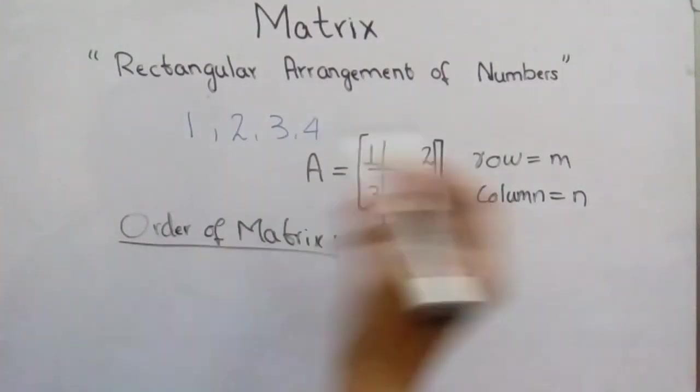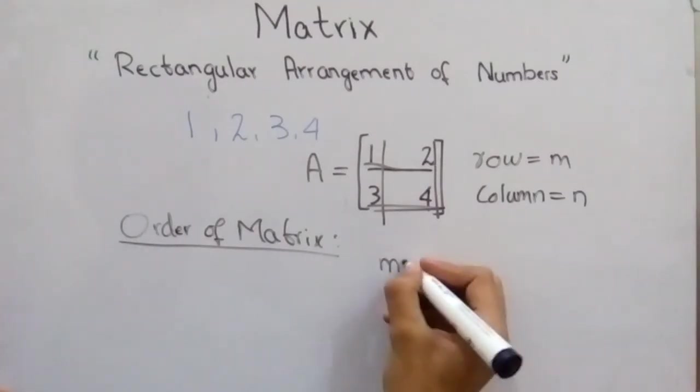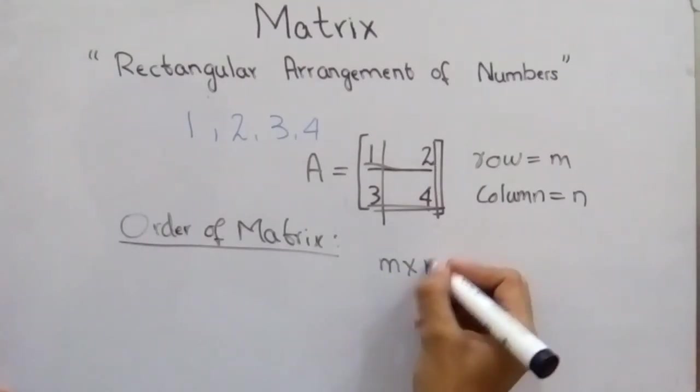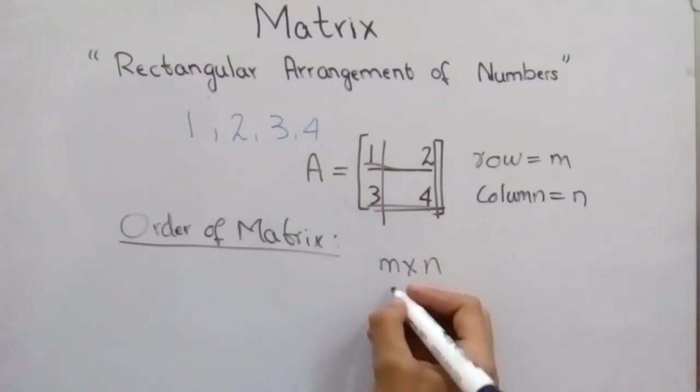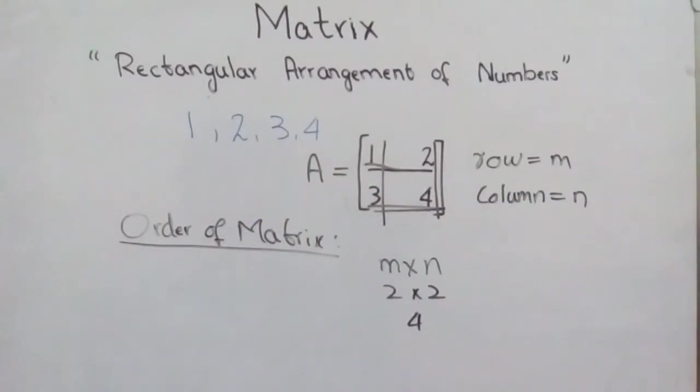To determine its elements, row multiply column formula. Row we have 2 and column 2, 2 multiply 2 is equal to 4. So matrix A consists of four elements. Hope you guys understand about matrix.